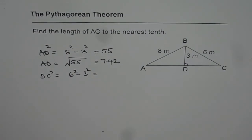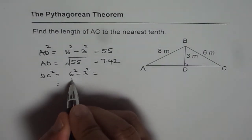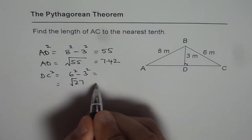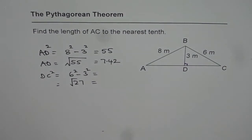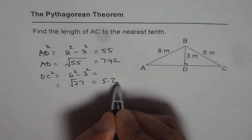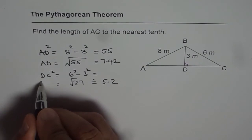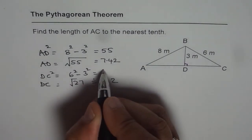36 minus 9, which is indeed 27. Square root of 27 equals approximately 5.2. So that is DC.